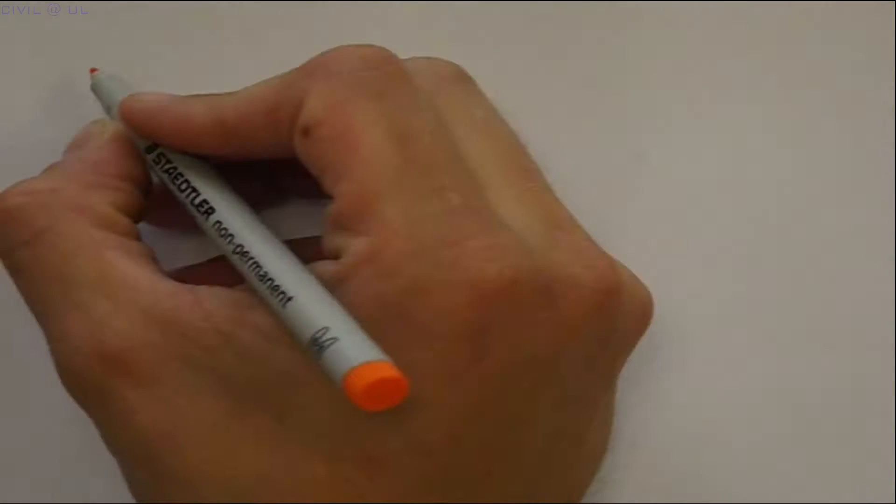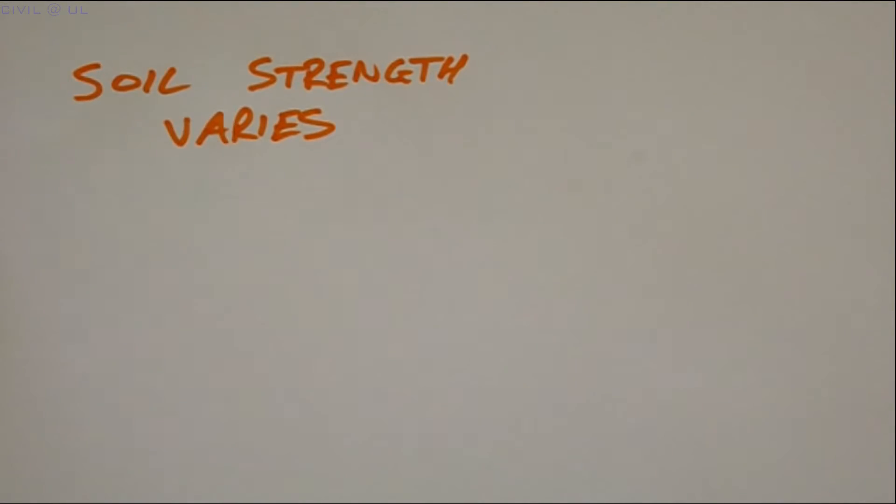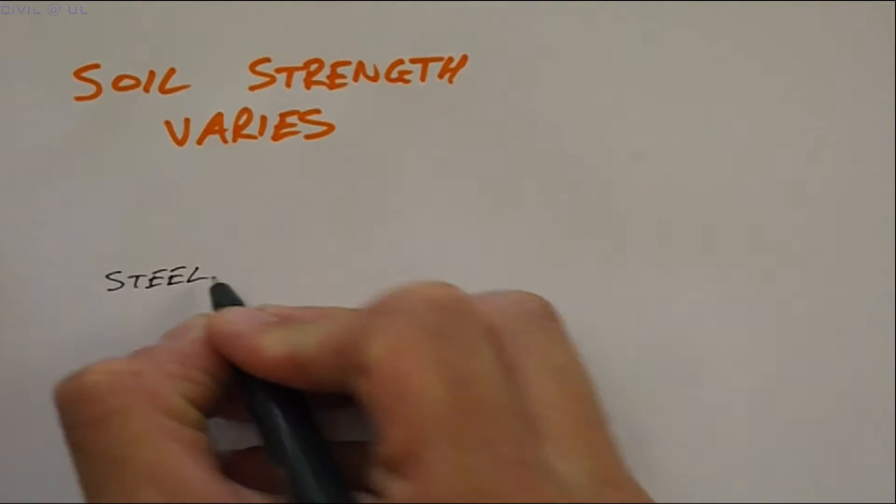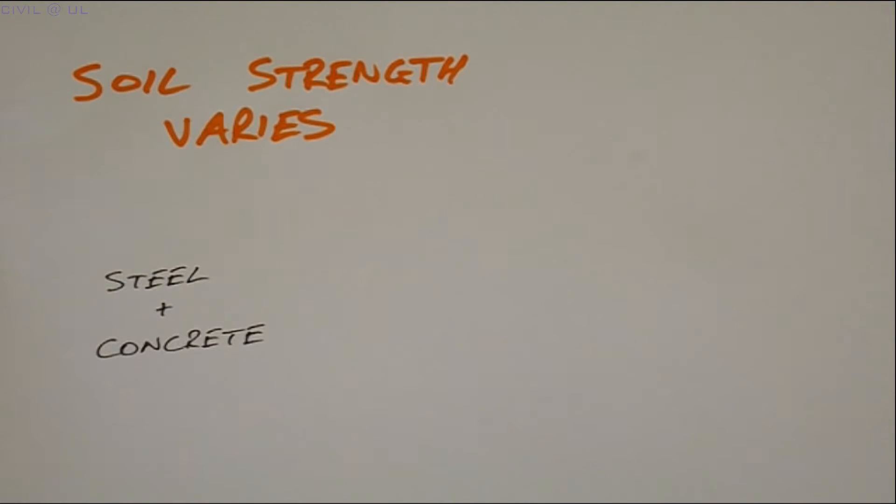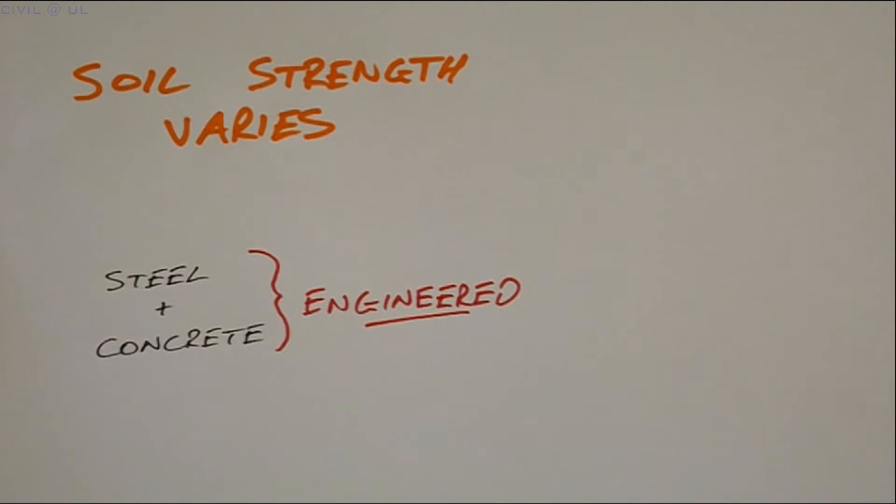From our work in earlier videos, it may be apparent that soil strength is not a unique value, as it tends to be for steel and concrete, two materials that are specified by the engineer and carefully controlled during manufacture, so their strength can be predicted with accuracy.